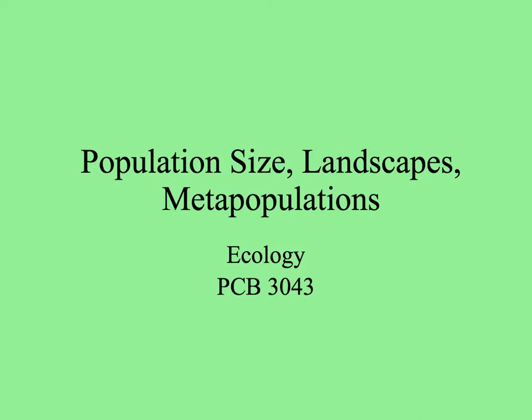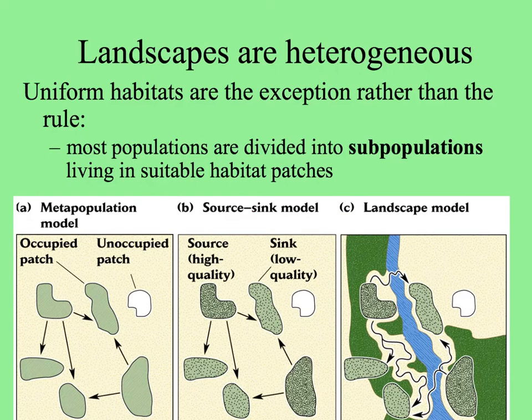When populations are distributed across the landscape, we can talk about metapopulations. Landscapes are not uniform, and because of this, because species live in places suitable for them to live — patches of appropriate habitat — most populations are divided into subpopulations. There are several models to describe how these subpopulations relate to one another.